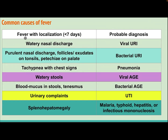Common causes of fever with localization less than seven days: watery nasal discharge suggests viral upper respiratory tract infection; purulent nasal discharge, follicles, exudate on tonsil, or petechiae on palate suggests bacterial upper respiratory tract infection; tachypnea and chest signs suggest pneumonia; watery stool suggests viral acute gastroenteritis; blood and mucus in stool with tenesmus suggests bacterial acute gastroenteritis; urinary complaints suggest UTI; hepatosplenomegaly could indicate malaria, typhoid, hepatitis, or infectious mononucleosis.